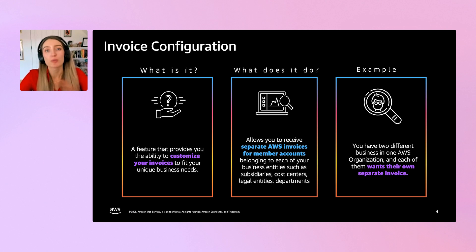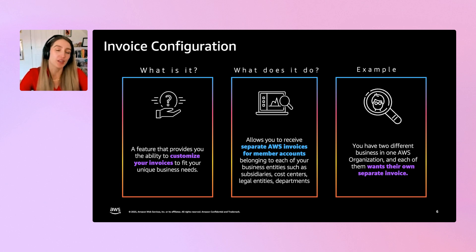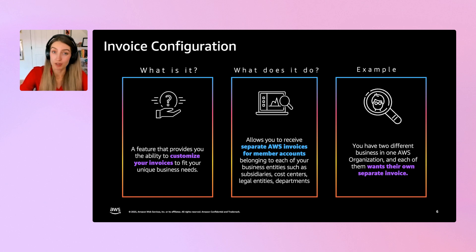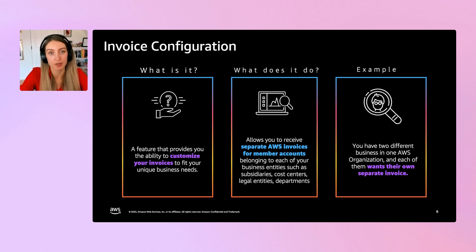Invoice Configuration is a little bit farther downstream and it relates to invoices, as the name suggests. At its core, it allows you as a FinOps admin to split the invoices that AWS sends you. Generally speaking, if you don't have invoice configuration set up, AWS will send you one consolidated bill for each AWS organization that includes all of the linked accounts' usage in that consolidated invoice.